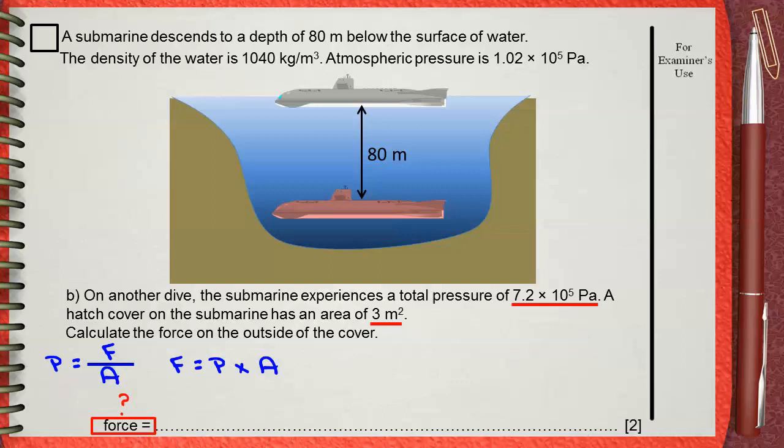The pressure is 7.2 times 10 to the power 5 pascals, according to the question. Also the area is 3 meters squared, this is the given in the question. This means that the force will be 2.2 times 10 to the power 6. And do not forget the unit. As long as pressure is measured in pascals, this is the standard unit, and the area is measured in meters squared, this is also the standard unit of the area. The force will be in newtons. Newtons is the standard unit for measuring force.